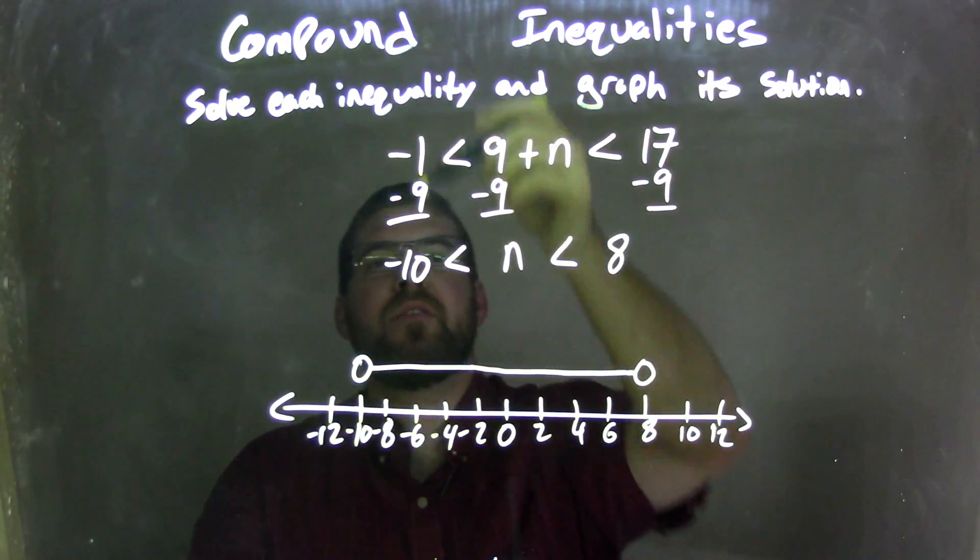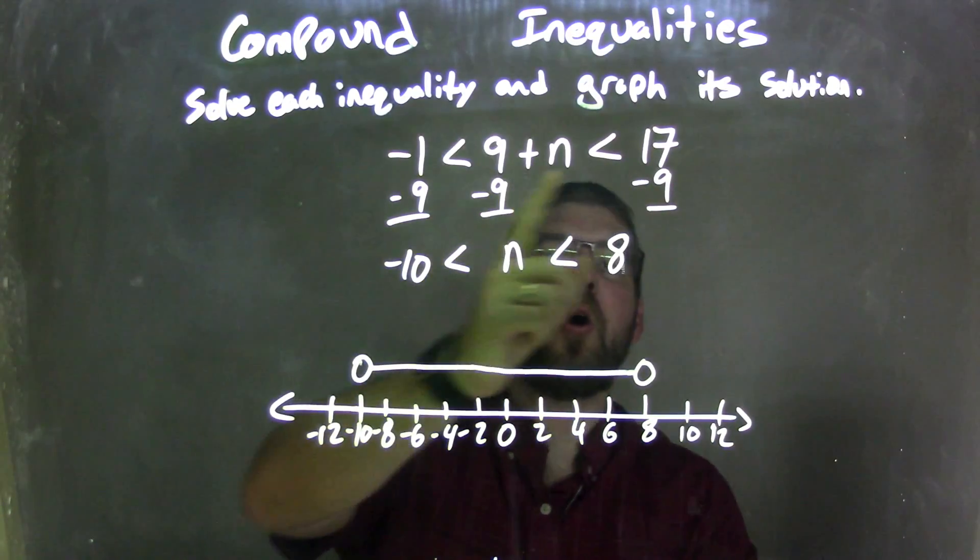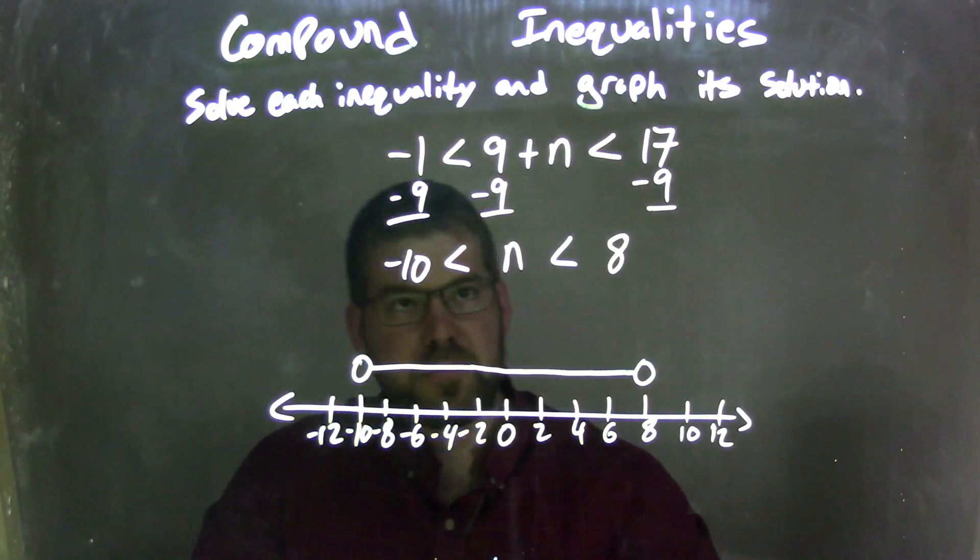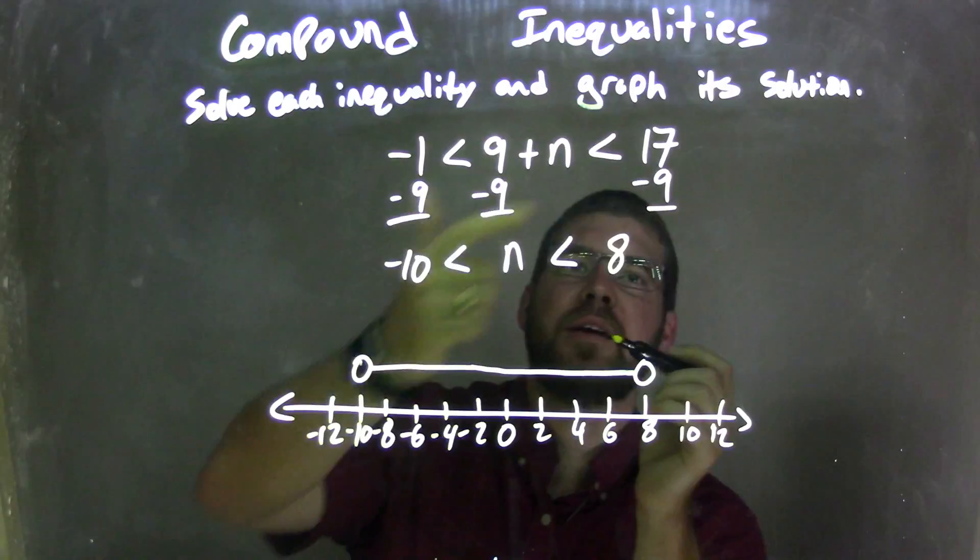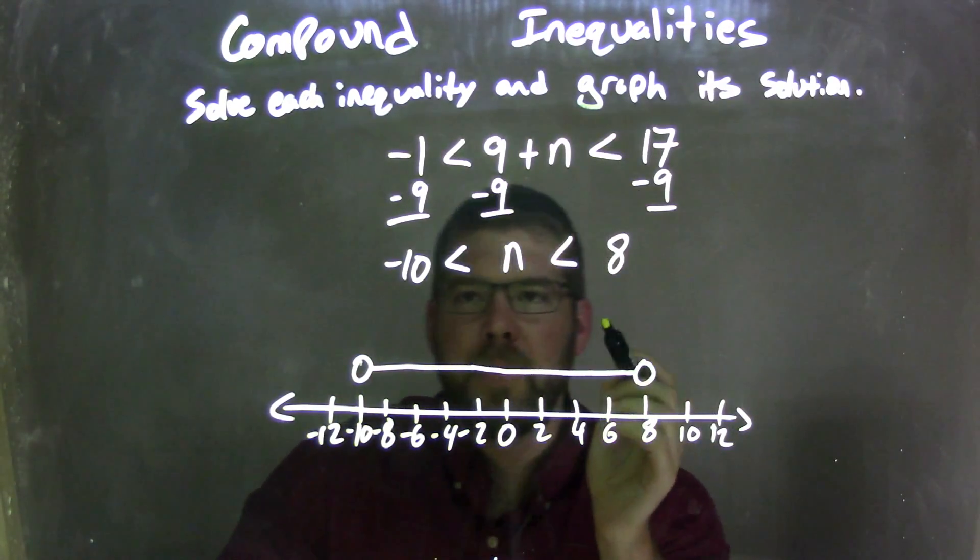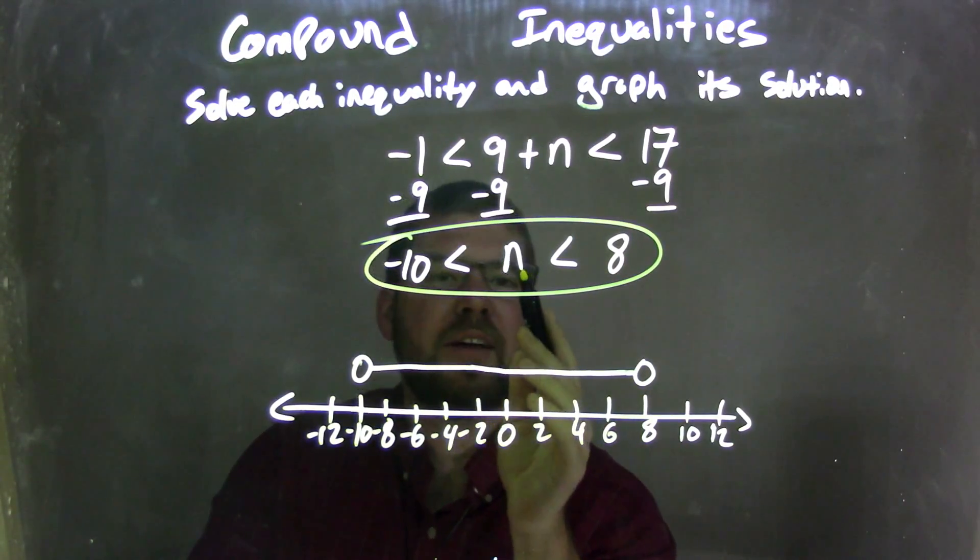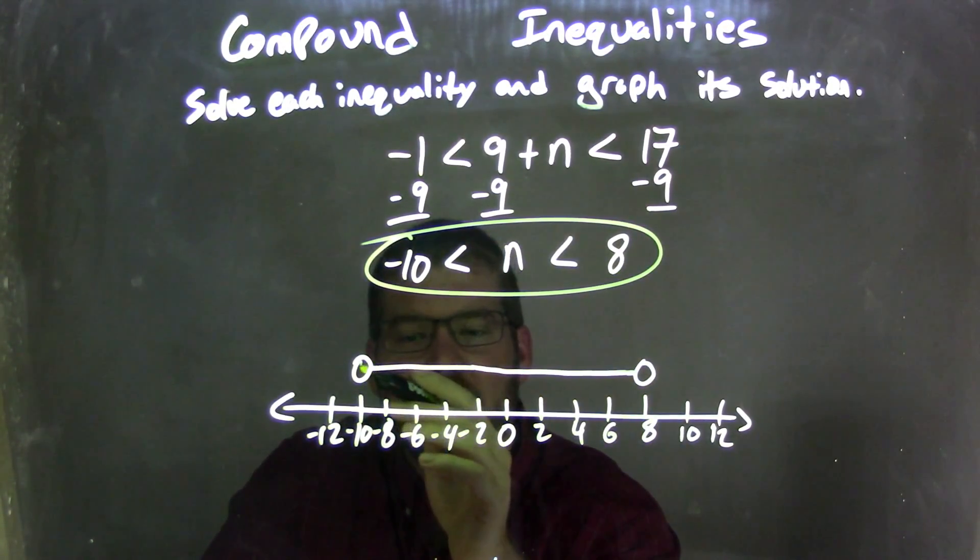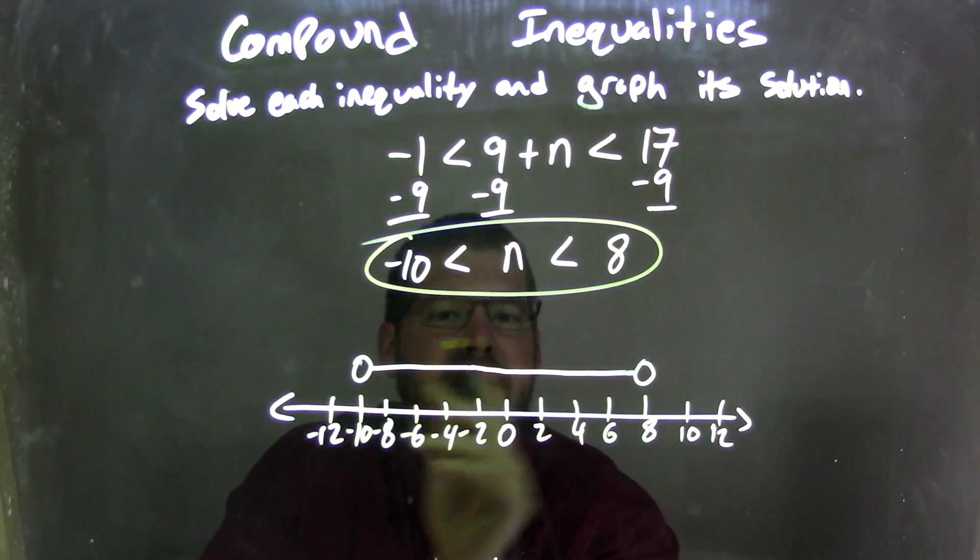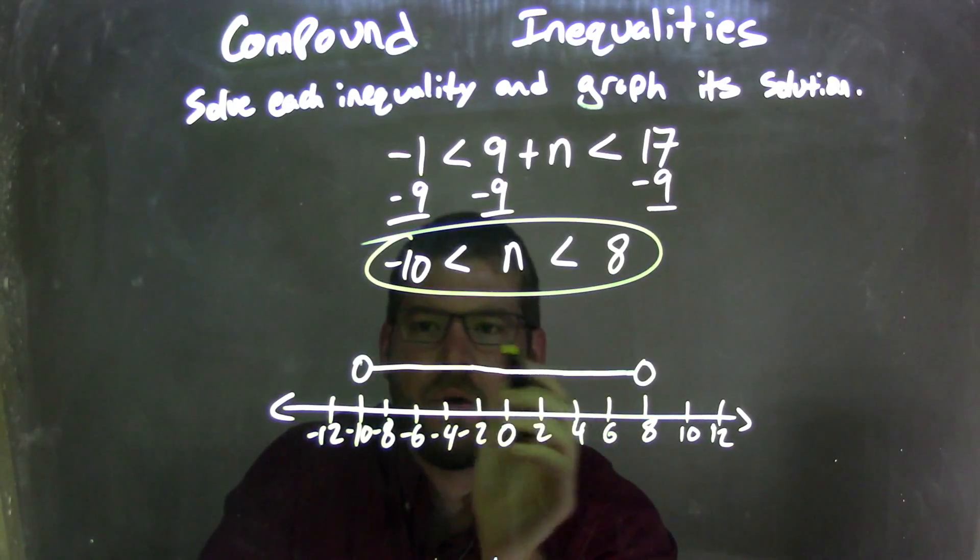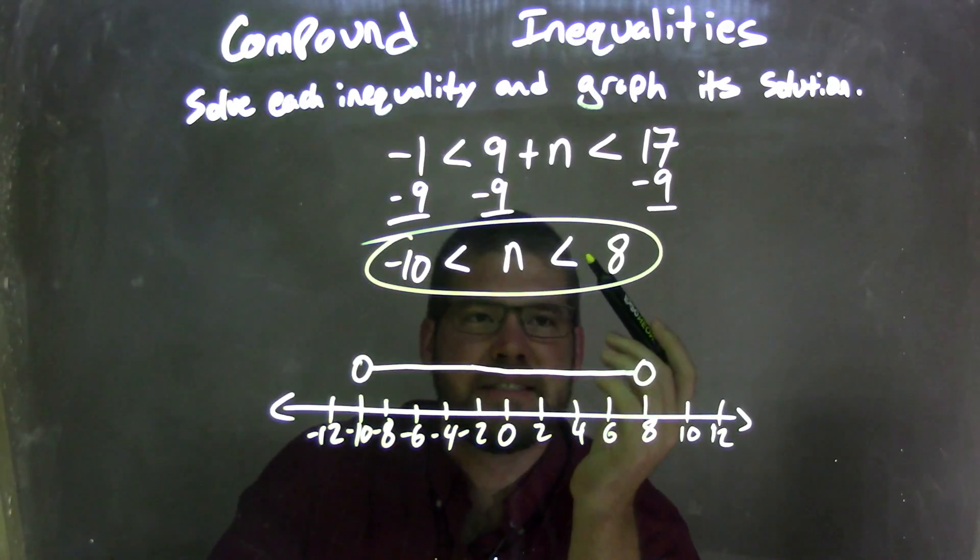So let's recap. We're given negative 1 is less than 9 plus n, is less than 17. I subtracted 9 to all parts, both sides of the inequality and the middle, leaving the n by itself in the middle. Negative 1 minus 9 being negative 10, and 17 minus 9 being 8 on the right there. But there's still one big inequality here: negative 10 is less than n, which is less than 8. So to graph that, I have an open circle at negative 10, n, and 8, showing that they can't equal those values, and n is between them. So our graph here matches our final answer, which is negative 10 is less than n, which is less than 8.